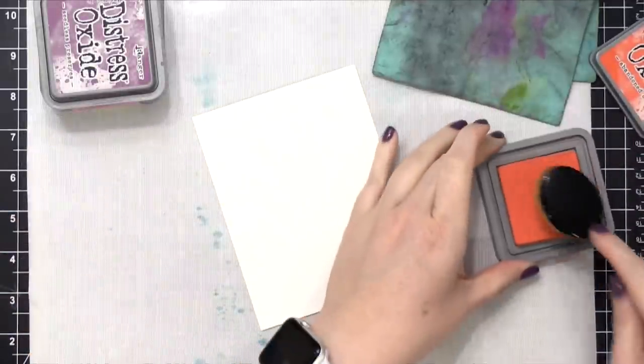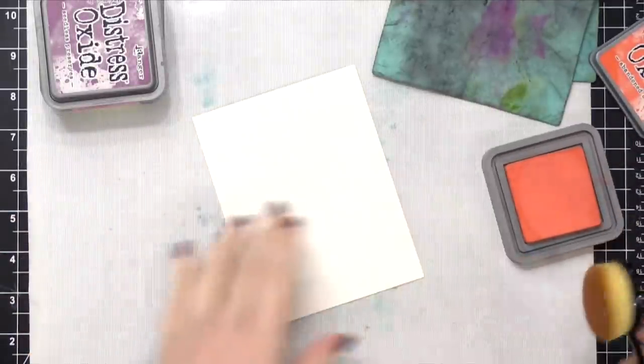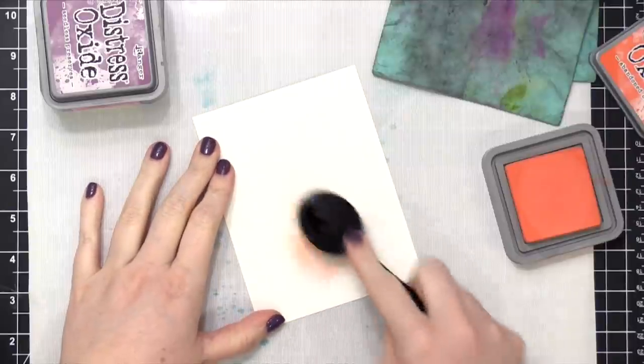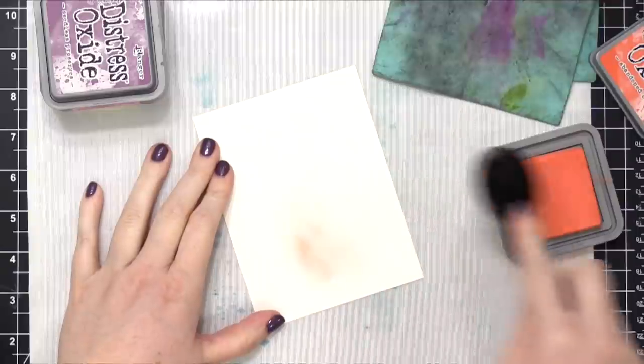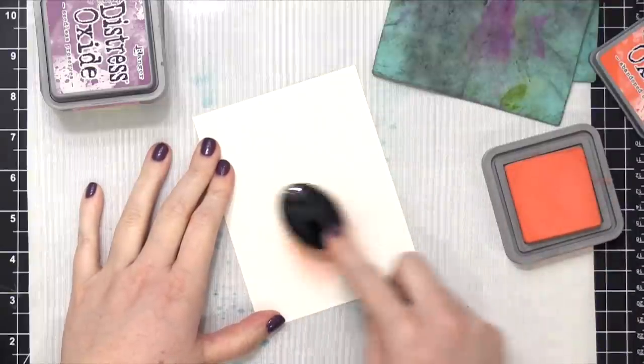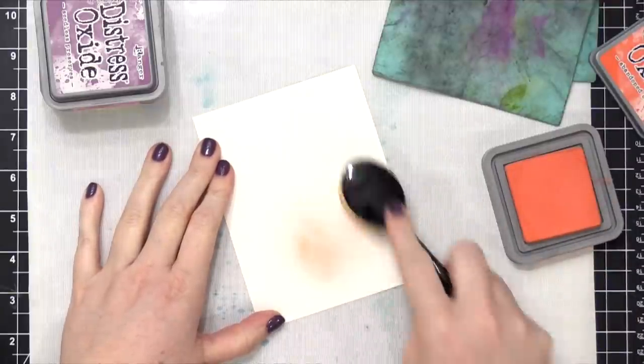So I'm gonna use four different colors of Distress Oxide inks. This first color is Abandoned Coral, and I have not previously tried these blending brushes, so I'm going in cold, not knowing exactly the best way to use them.